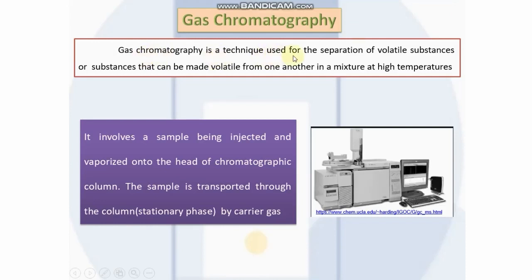Gas chromatography is a technique used for the separation of volatile substances, or substances that can be made volatile from one another in a mixture at high temperatures. Here you can see a picture of a gas chromatographic unit on the right side.